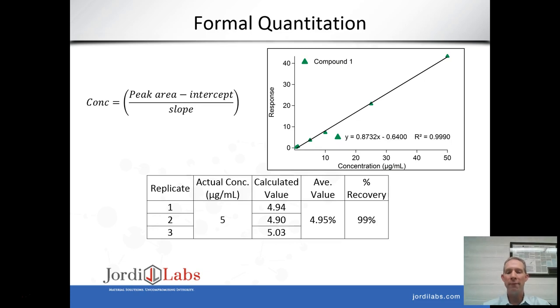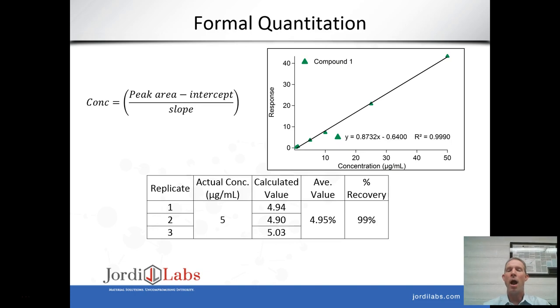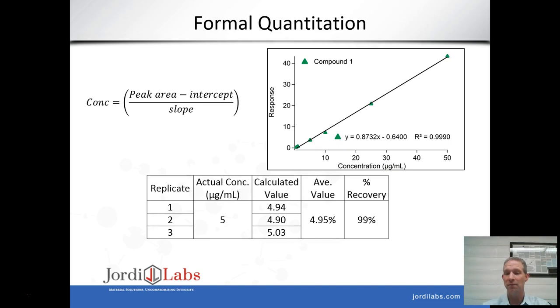When an actual reference standard is available, quantitative accuracy is dramatically improved — we get back 99% recovery — because having a reference standard eliminates the response factor variation problem.